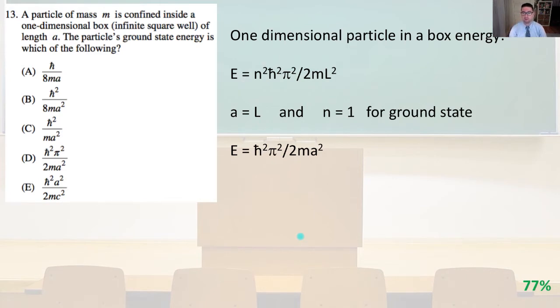It's the one-dimensional particle in a box energy. And it is E equals N squared H-bar squared pi squared over 2 M L squared, where M is the mass, and L is the length of the box, and in our problem A is the length. So A equals L, and N is going to equal 1 for the ground state. So we simply have E equals H-bar squared pi squared over 2 M A squared, where A is the length. And so that is answer D.